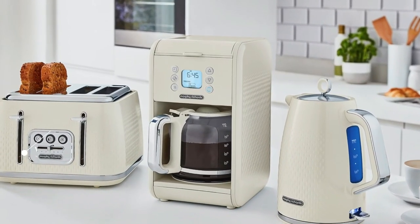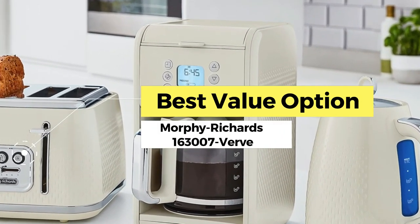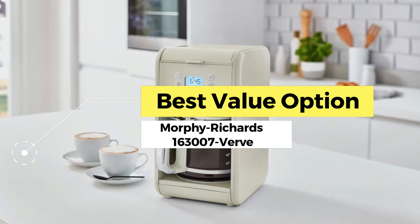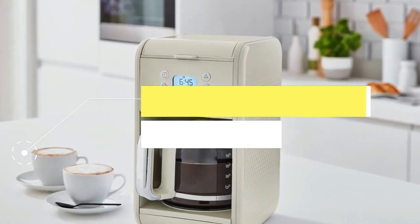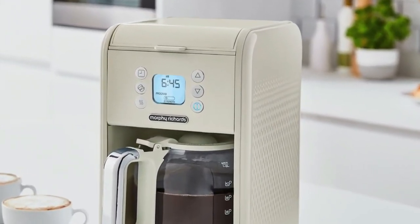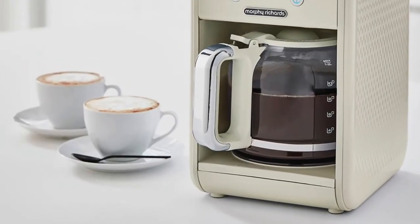Next, the best value option: The Morphe Richards 163007 Verve. There are three main types of filter coffee machines.